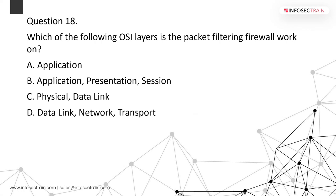Which OSI layer does a packet filtering firewall work on? The correct answer is D — data link, network, and transport. In the data link layer, VPN can also be deployed along with a packet filtering firewall. In the network layer, we can use VPN, stateful multi-layer inspection, and NAT. In the transport layer, VPN can also be used with a packet filtering firewall.